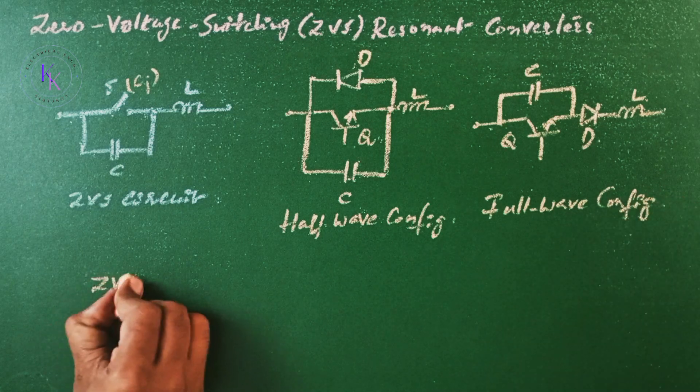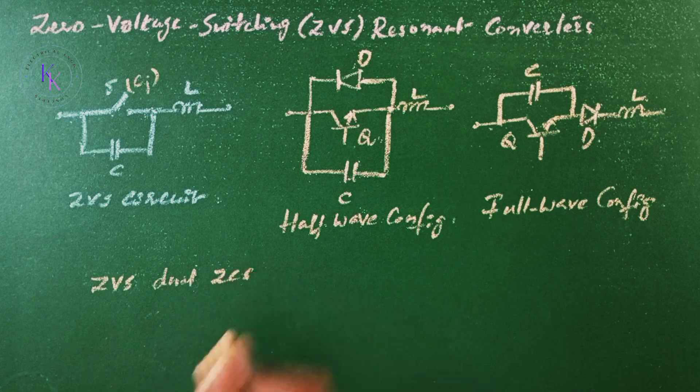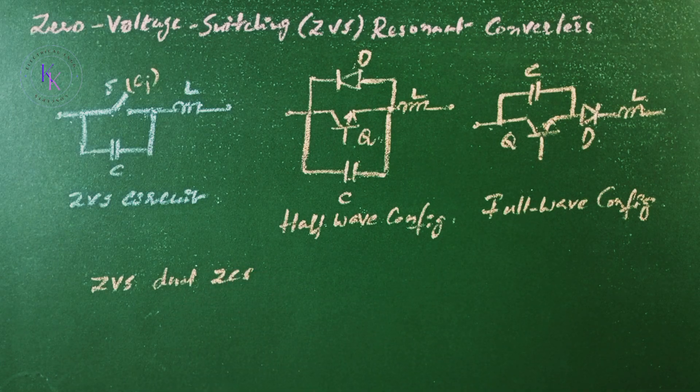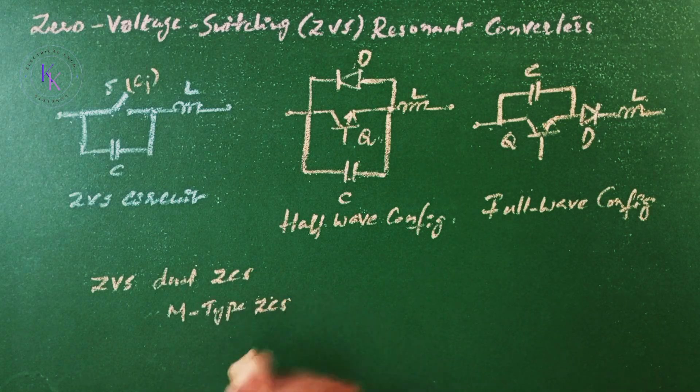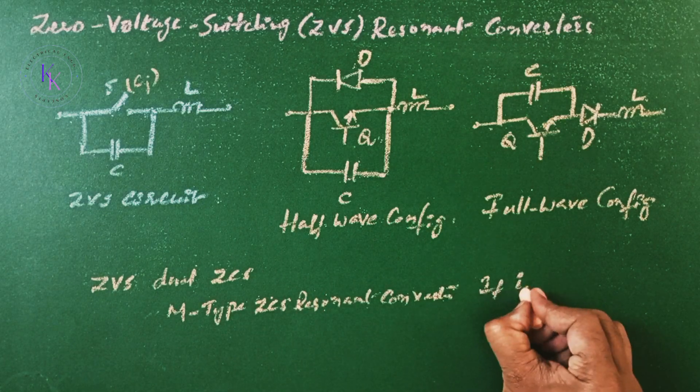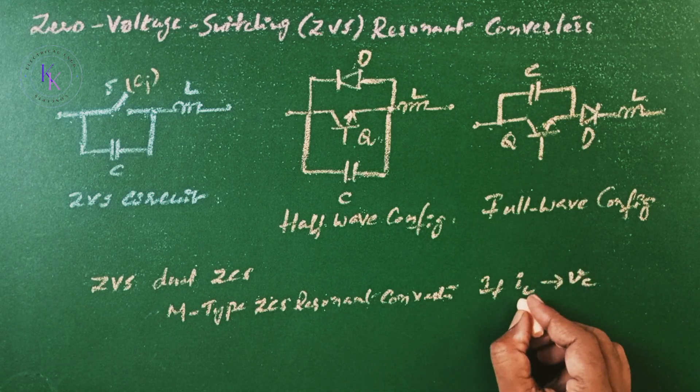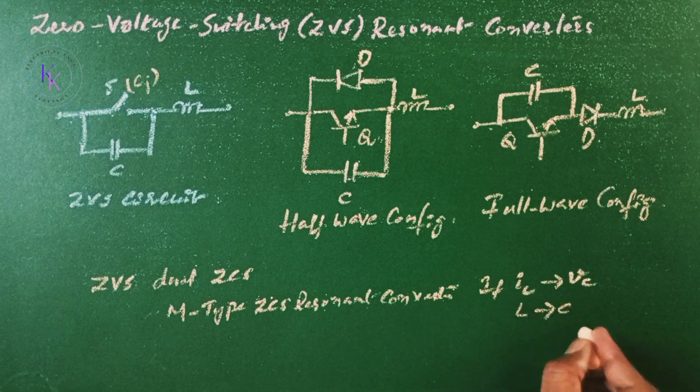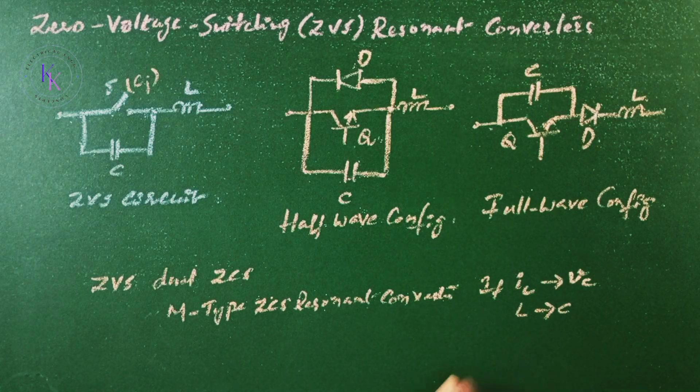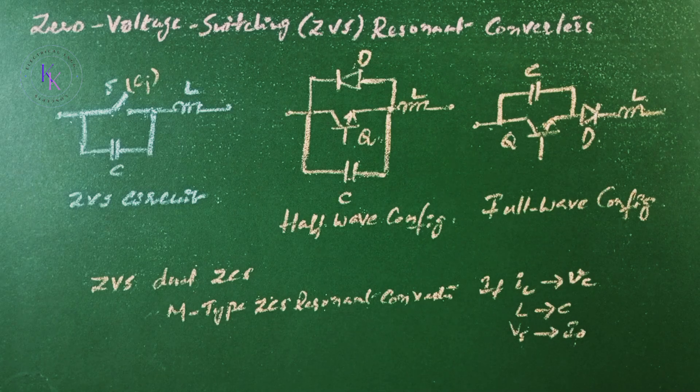A zero voltage switching converter is the dual of zero current switching converter. The equations for N-type ZCS resonant converter can be applied if IL is replaced with VC and vice versa, L by C and C by L, and VS by I0 and I0 by VS.